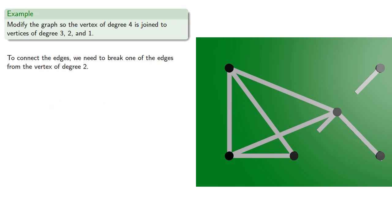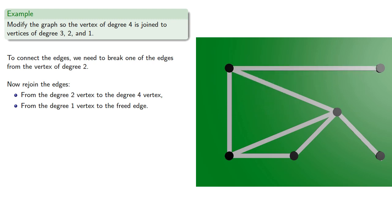To reconnect the edges, we need to break one of the edges from the vertex of degree 2. Now rejoin the edges. From the degree 2 vertex to the degree 4 vertex, and from the degree 1 vertex to the freed edge, and every edge is properly secured by two vertices.